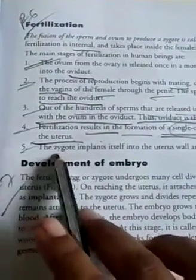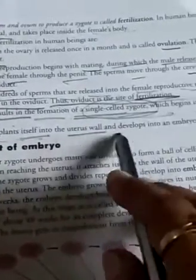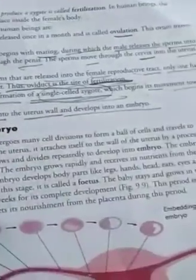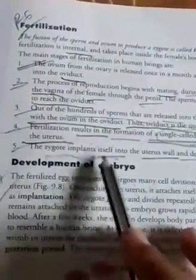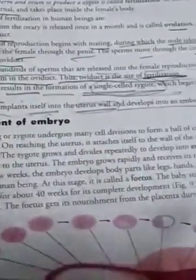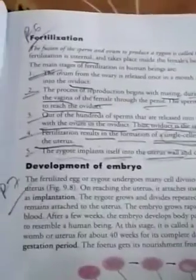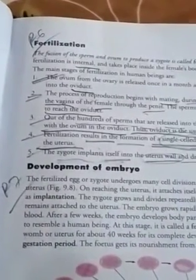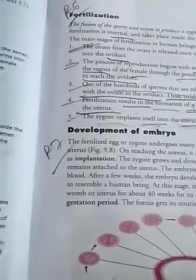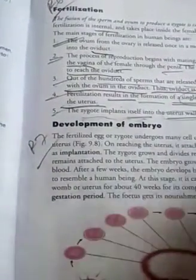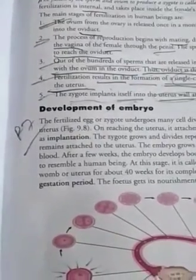The zygote implants itself into the uterus wall and develops into an embryo. These are the stages of fertilization. The next topic is the development of the embryo, which we will continue in the next part. Thank you, students.